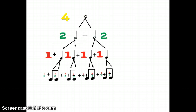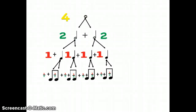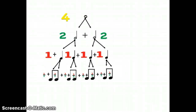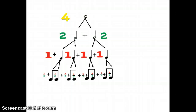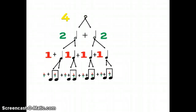A whole note is worth 4 beats. When we cut it in half, we get 2 half notes, each worth 2 beats. We can add them back together again to equal the same value as that original whole note. When we split those half notes in half, we get 4 quarter notes. It takes 2 quarter notes to equal the same value as one half note, and 4 quarter notes to equal the same value as that original whole note. When we split a quarter note in half, we have 8th notes, which are each worth 1 half of a beat. It takes 2 eighth notes to equal the same value as one quarter note, 4 eighth notes to equal the value of one half note, and 8 eighth notes to equal the same value as one whole note.